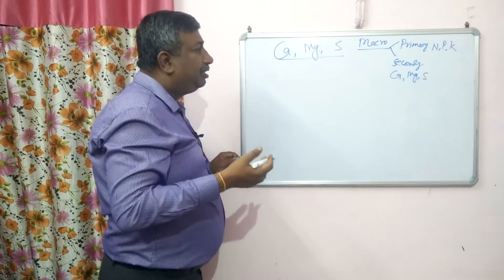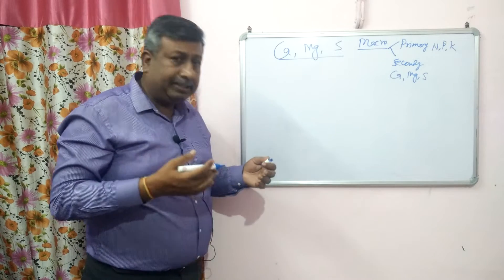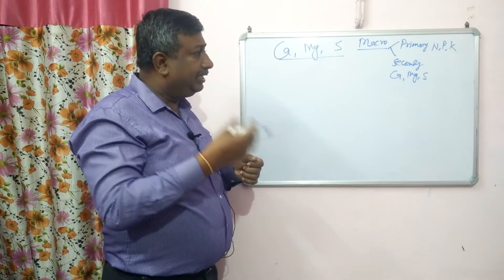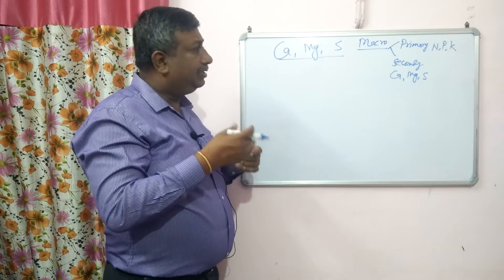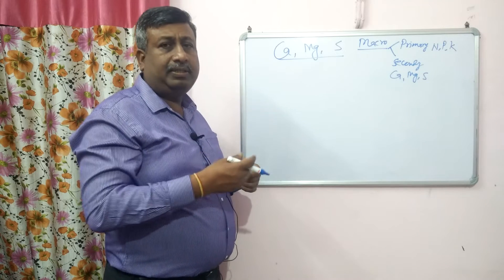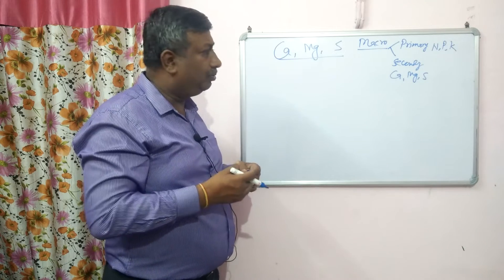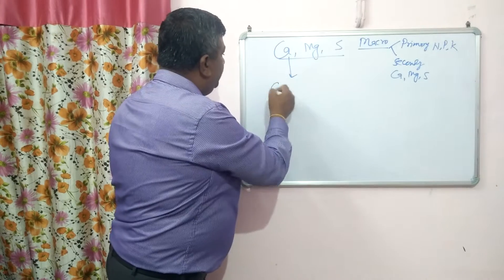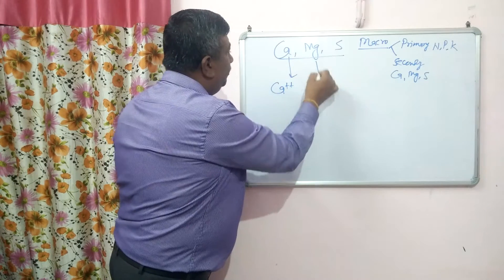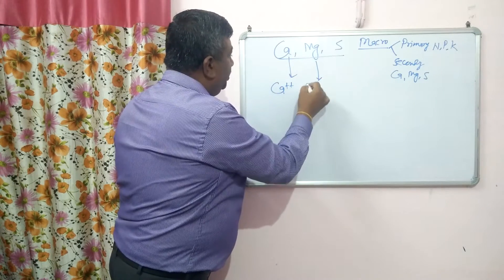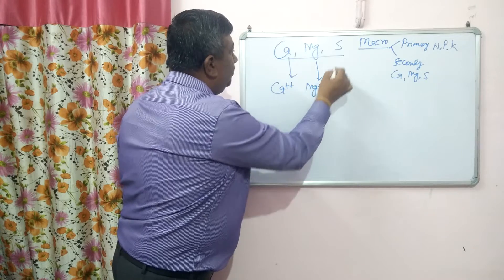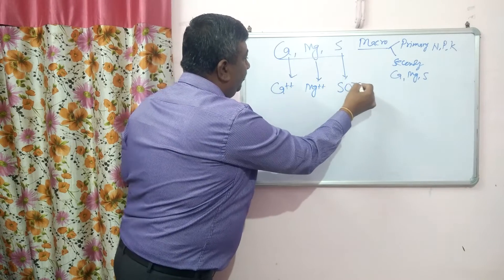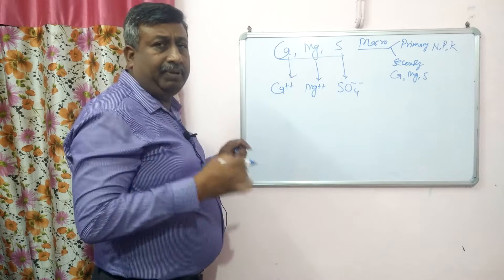Calcium, magnesium and sulfur are present in primary nutrients as materials or as constituents, so their importance for application is secondary — that is why they are known as secondary nutrients. Plants absorb calcium in the divalent form Ca²⁺, magnesium in the divalent form Mg²⁺, and sulfur in the form of the sulfate ion SO₄²⁻. These are the plant-available forms.